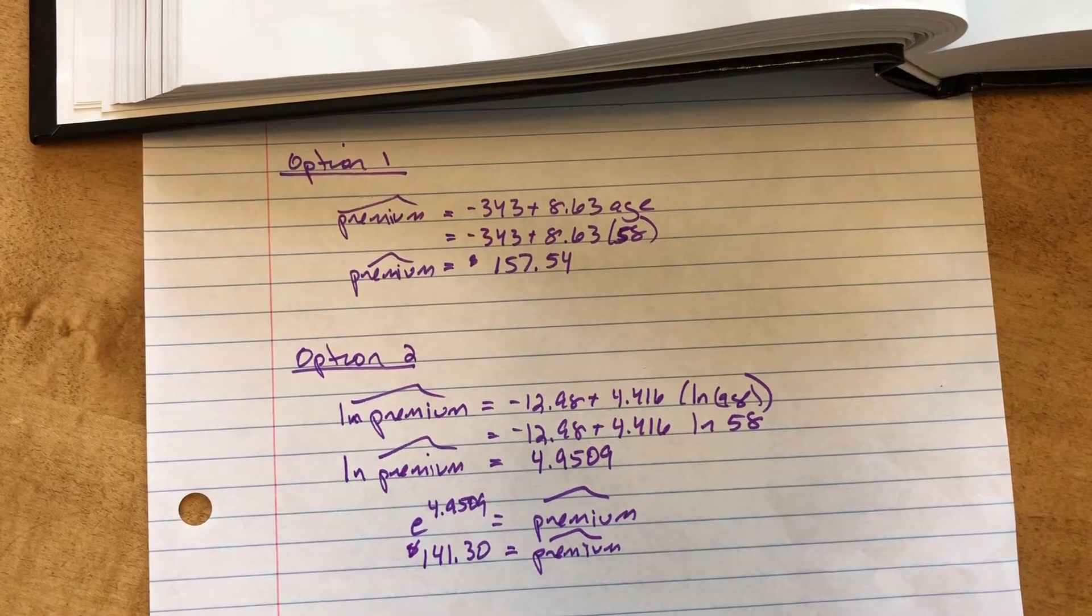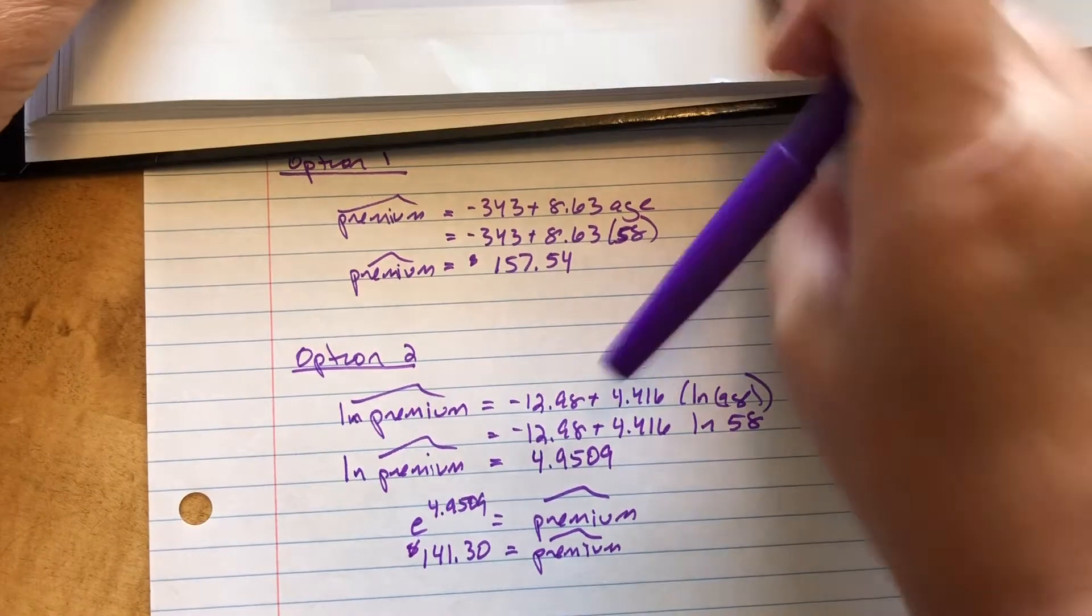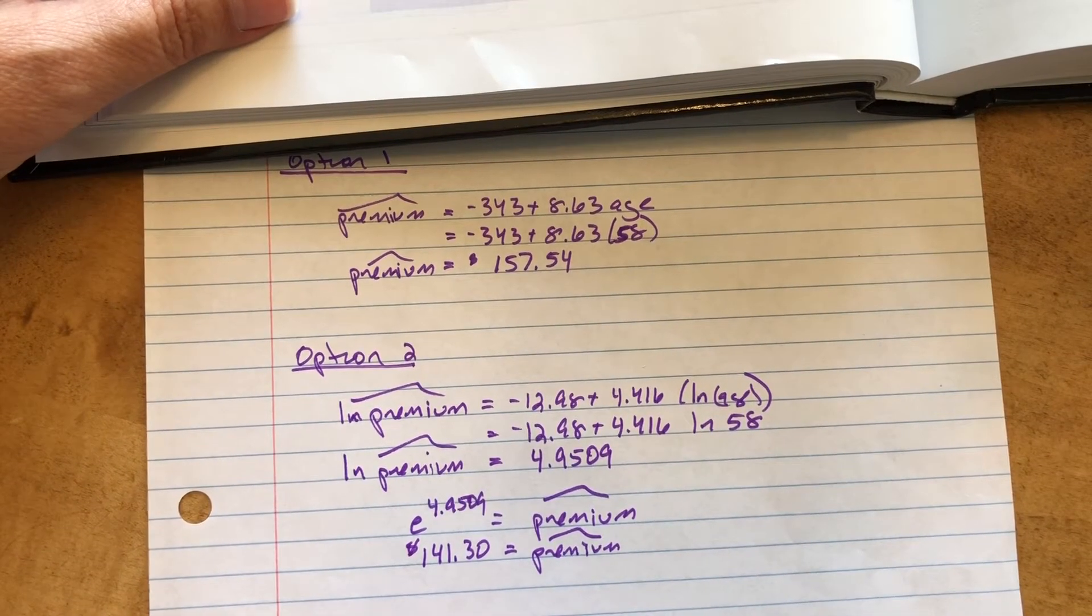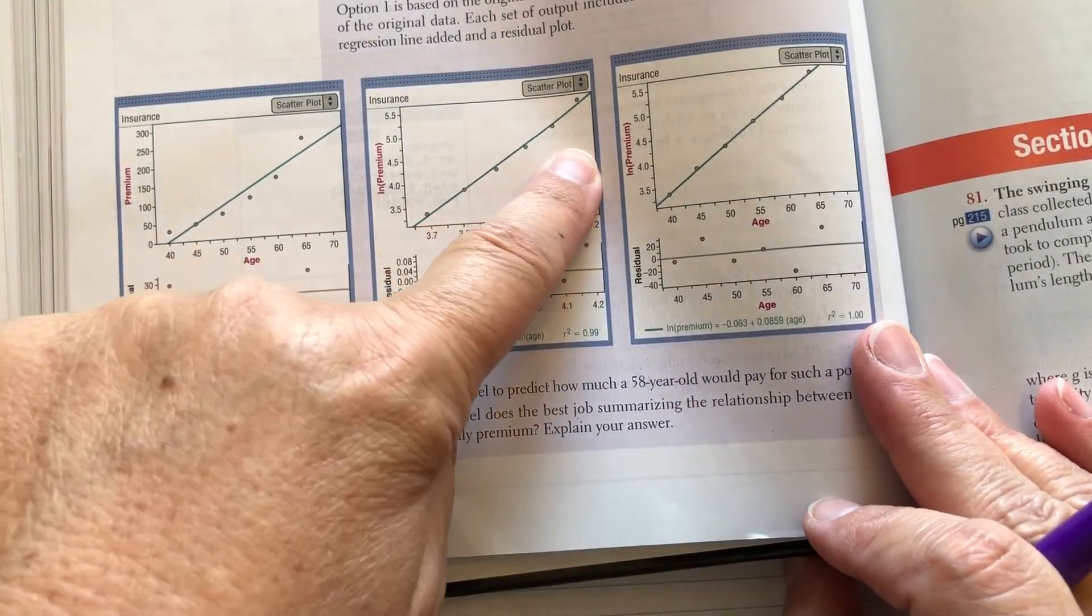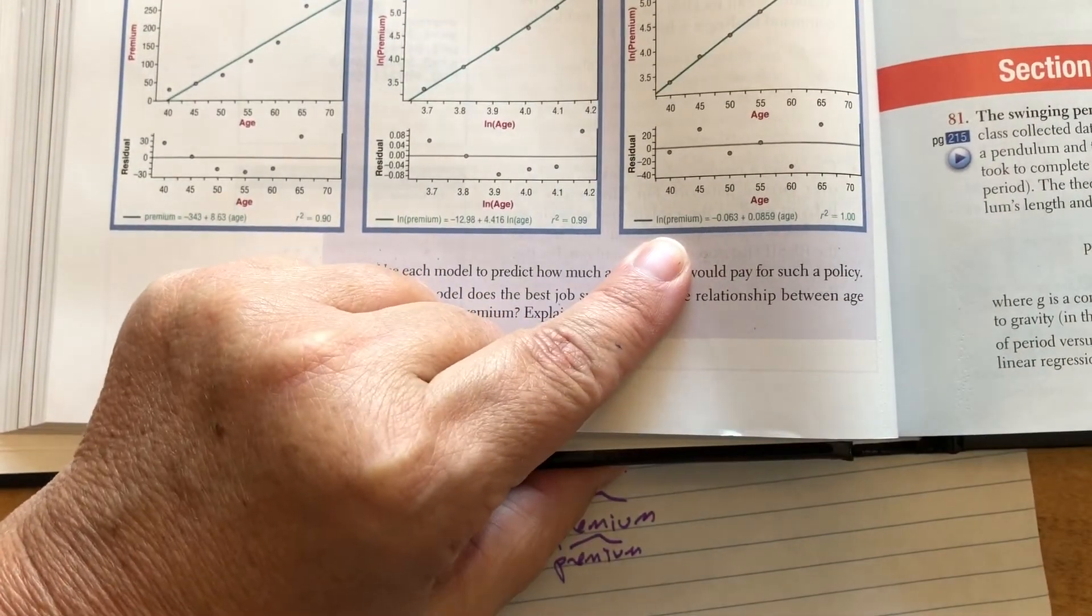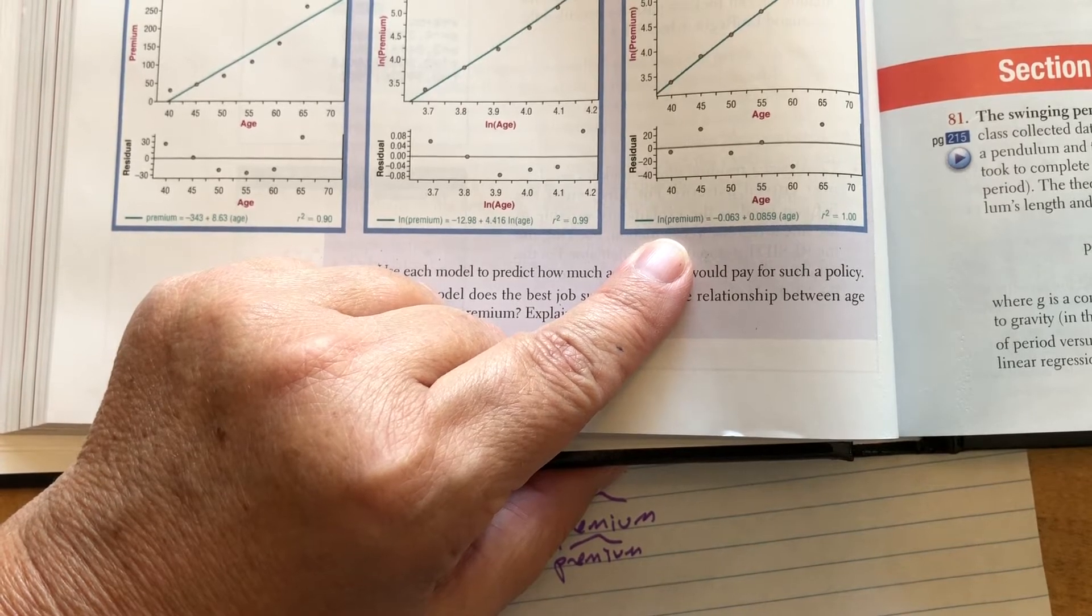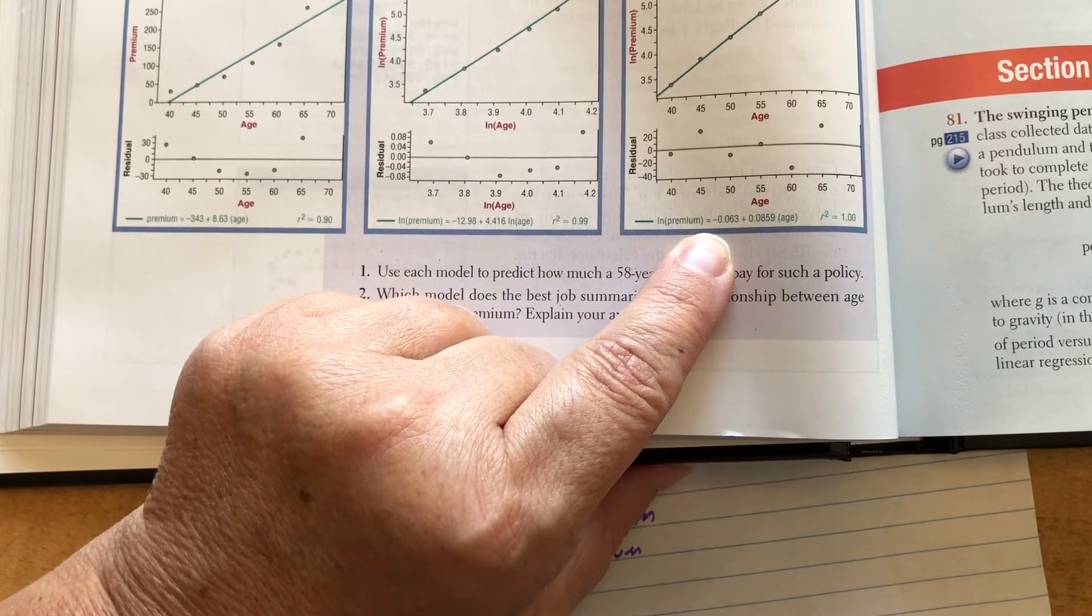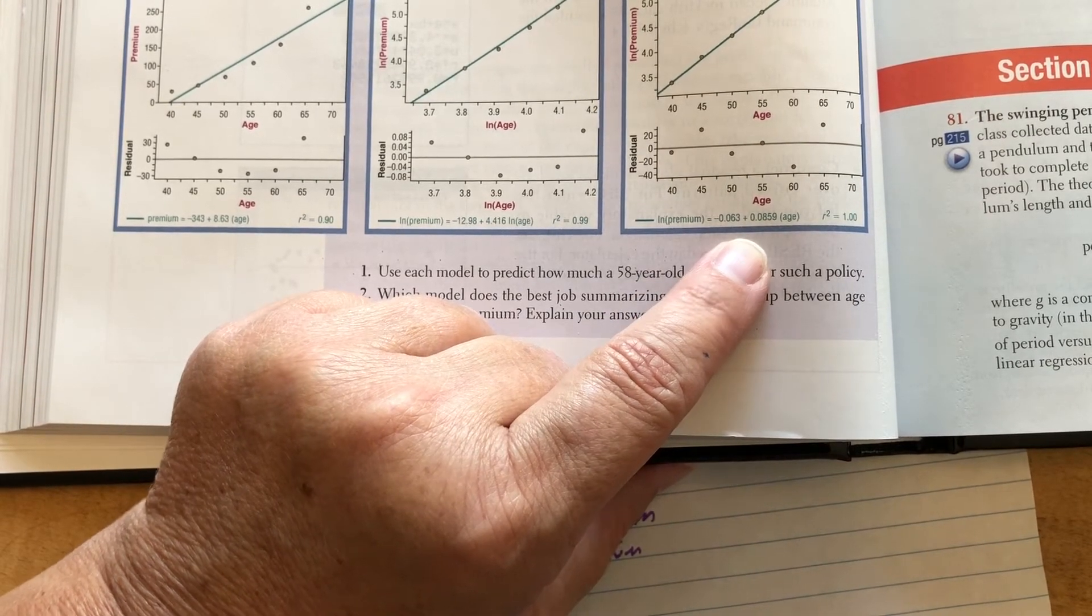And again, seems reasonable. Pretty close to 157. A little cheaper. Third option. Back up to the book. Third option, I kept the age but I natural logged the premium. So there is my equation. So natural log of the predicted premium equals, what is that, negative 0.063 plus 0.0859 times the age.